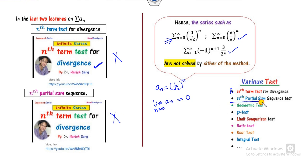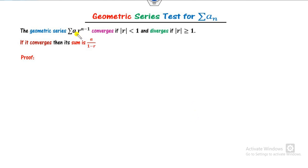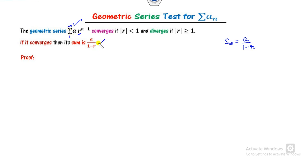So we will explain the third method called the geometric series test for infinite series. What does this test say? If you have a geometric series, it converges if the absolute value of the common ratio r is less than 1, and diverges otherwise. If it is convergent, the sum of the GP series at infinity is a over 1 minus r, which is the infinite sum of this series.